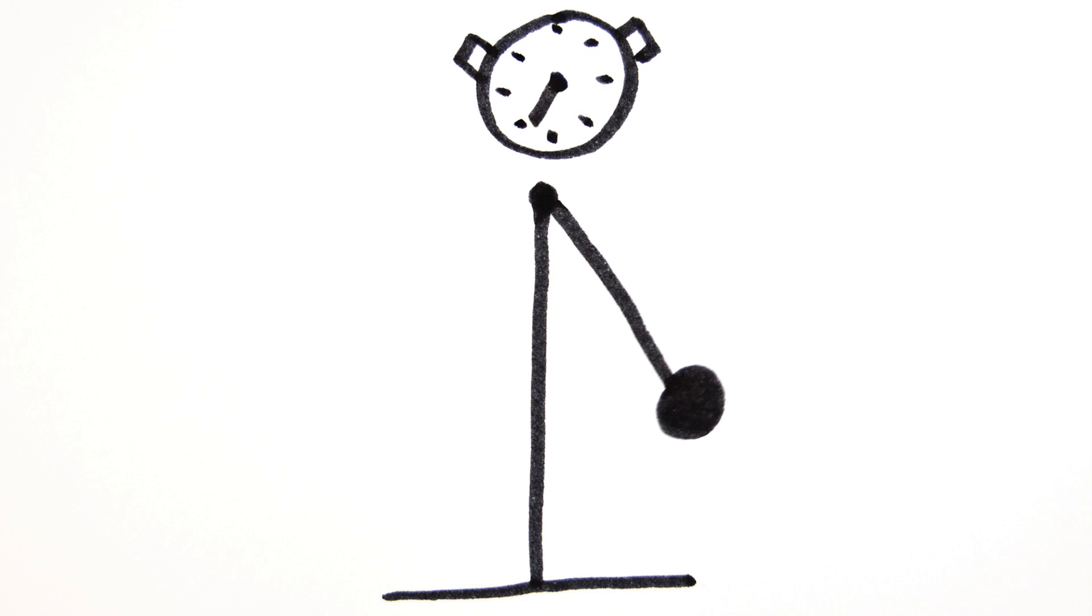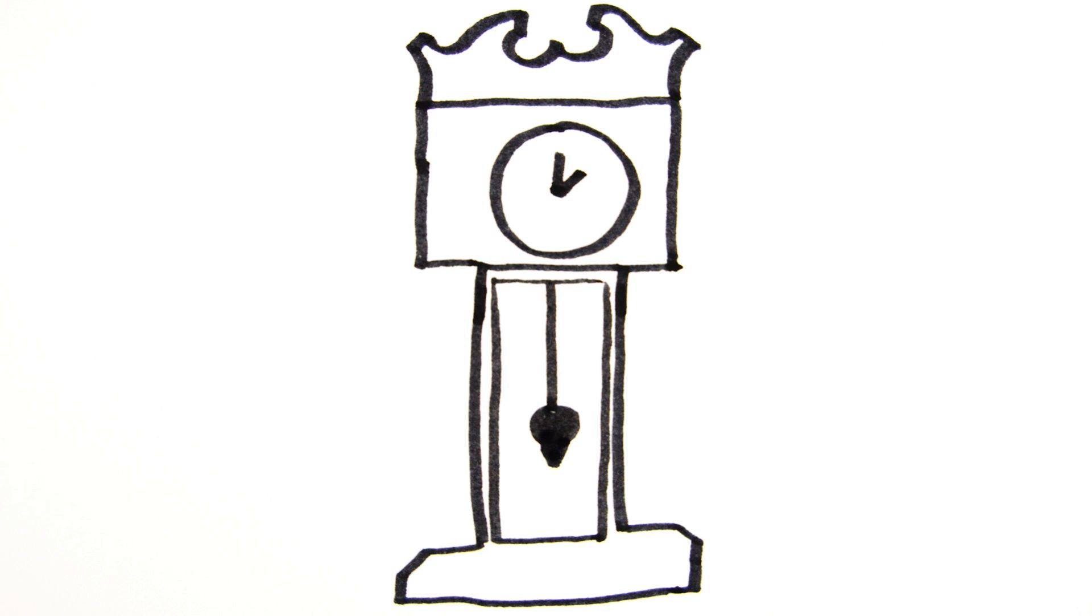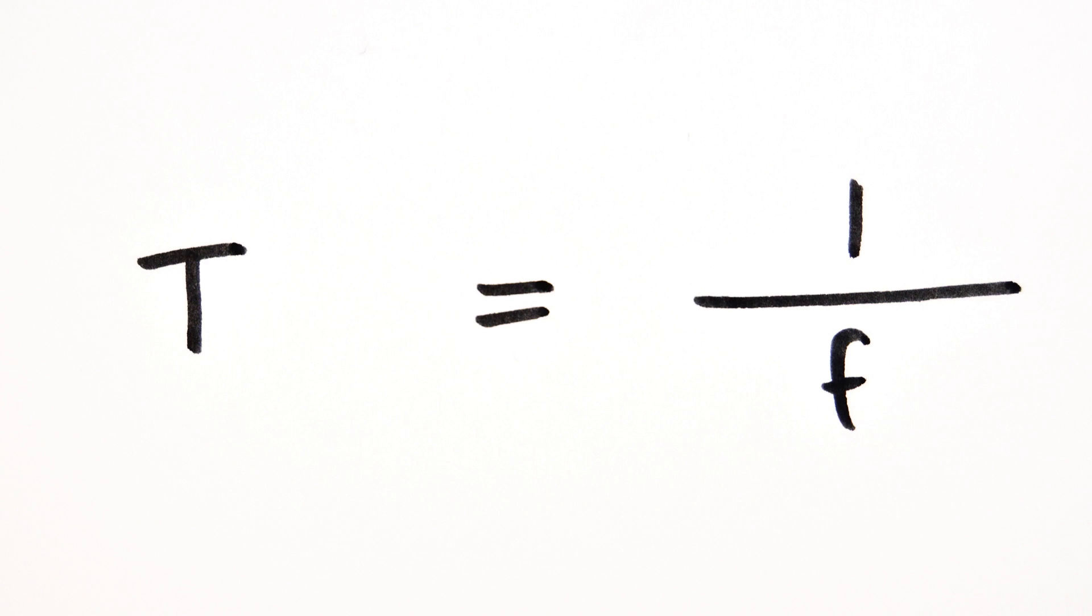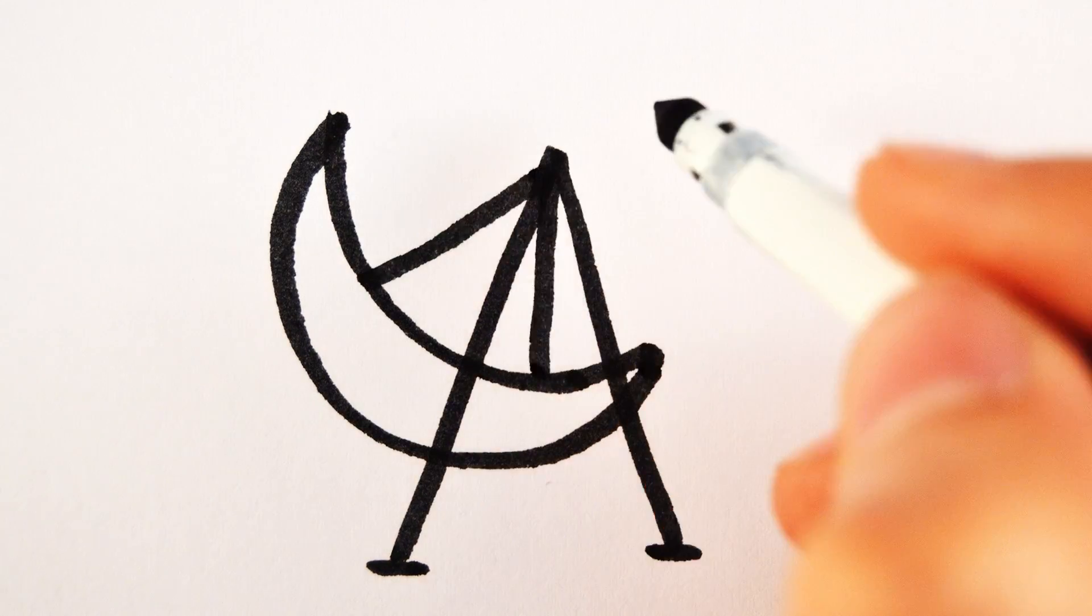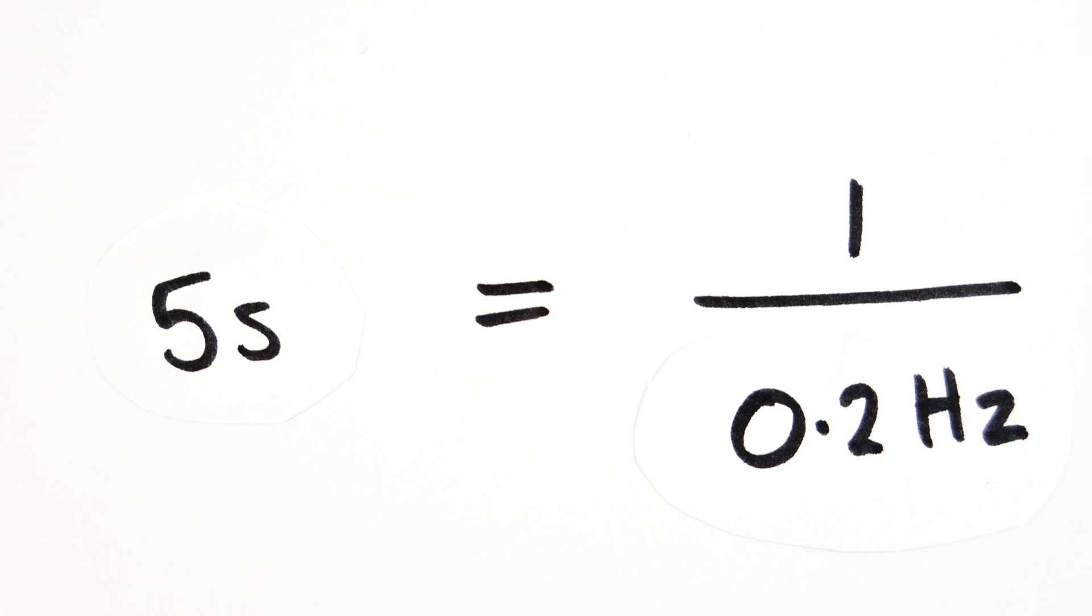The time taken for it to swing from one side to the other and back again is called a time period. The time period of a pendulum of the same length is always the same no matter what height you release it from, which is what makes them so good at keeping time. The time period and the frequency are related by the formula T equals 1 over F. So if a pirate ship at a theme park swung with a frequency of 0.2 hertz, then the time period would be 5 seconds.